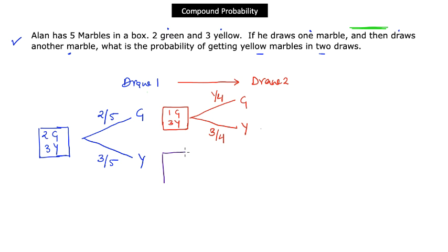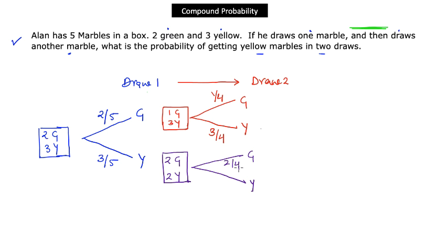If the first draw was a yellow instead, the box would then have two green and two yellow remaining — four total. In that case, the probability of getting a green on the second draw is 2 over 4, and the probability of getting a yellow is also 2 over 4.